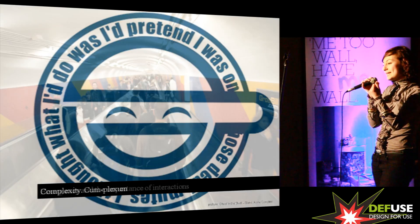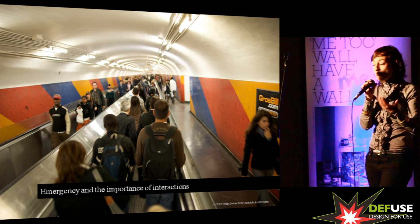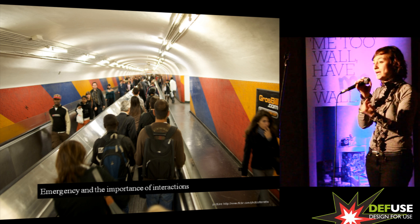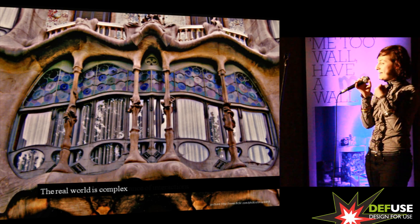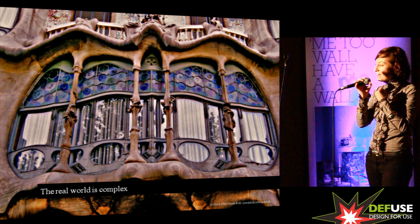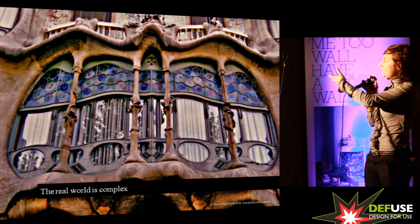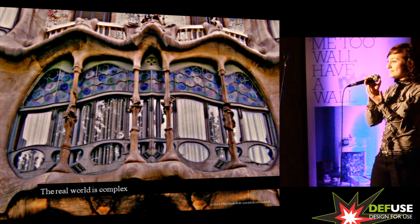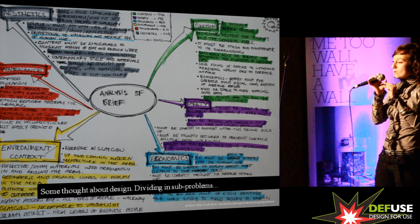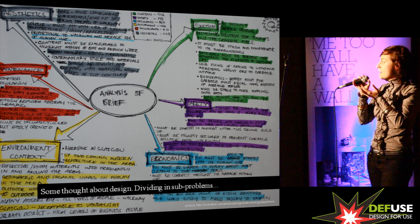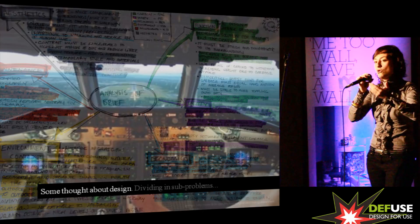We are part of the world and we can interact with it. The importance is emergence and the importance of interaction. We are part of the world. But if we think in a mechanistic way, we are not capable of understanding the difference. The real world is complex. Gaudi tried to understand the world and reproduce it without analyzing all the little things. The error, many times, is to analyze the problem by breaking it into sub-problems — but then we lose the vision of the whole. The key is to understand that the world is more than the sum of its single parts.